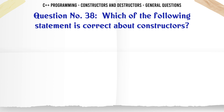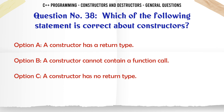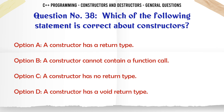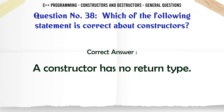Which of the following statements is correct about constructors? A. A constructor has a return type. B. A constructor cannot contain a function call. C. A constructor has no return type. D. A constructor has a void return type. The correct answer is A constructor has no return type.